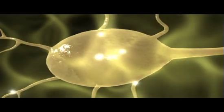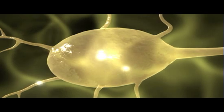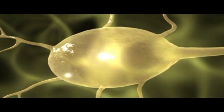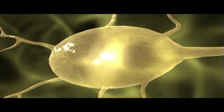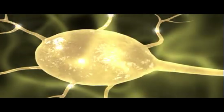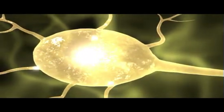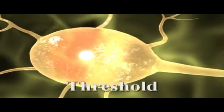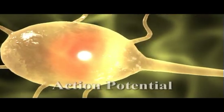If a neuron is stimulated, the negative potential inside the neuron can be made either more or less negative depending on the stimulus. If potential is made sufficiently less negative, it reaches a level called threshold and an action potential is triggered.